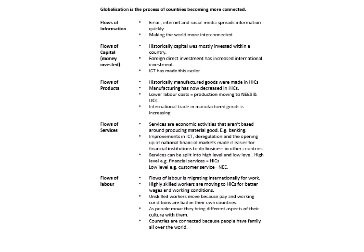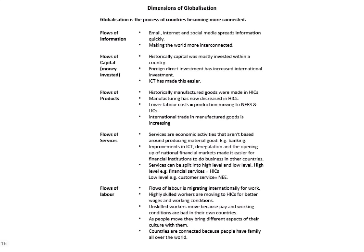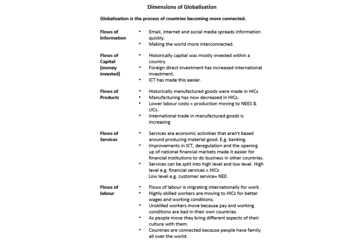Starting at the beginning of global systems and governance, the big thing you need to be aware of is the idea of dimensions of globalisation. Globalisation is just the process of countries becoming more connected, via flows of information (think the internet and emails), flows of capital (think investment), products (labour costs), international trade, services (improvements in IT, customer service), and flows of labour (international migration). A mixture of these five things are causing countries to become more connected and therefore support globalisation.